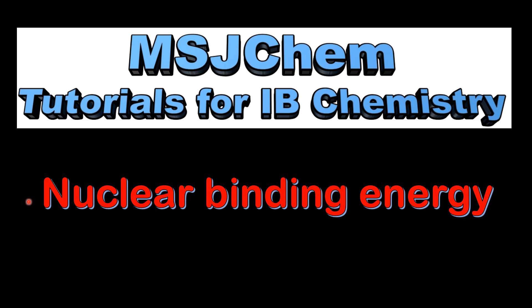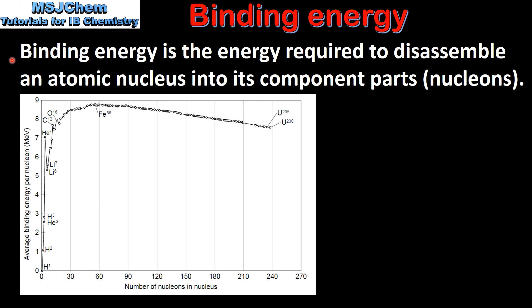This is MSJChem. In this video I'll be looking at nuclear binding energy. Binding energy is the energy required to disassemble an atomic nucleus into its component parts, which are also called nucleons — that's the protons and neutrons in the nucleus of an atom.